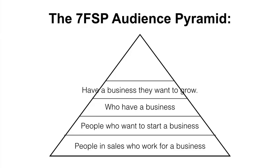Let's look at a quick example for the seven-figure sales presentations training course — this product. My pyramid looks like this: at the bottom, people in sales who work for a business. The next group, people who want to start a business. Then people who currently have a business. And above them, people who have a business they want to grow.